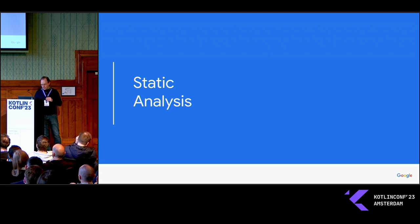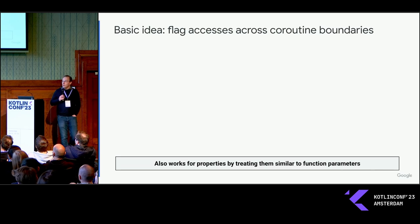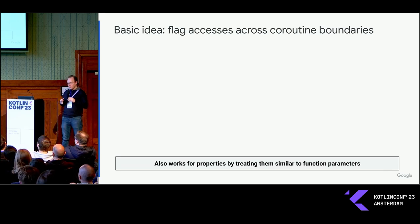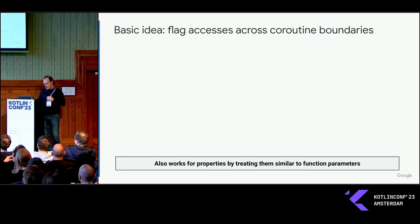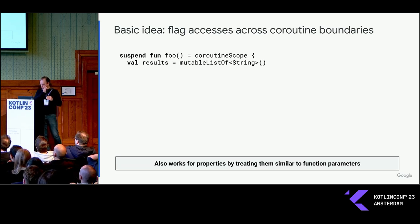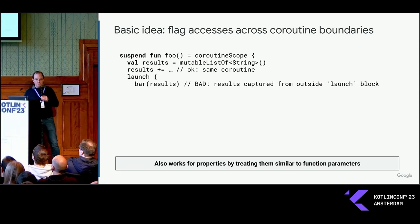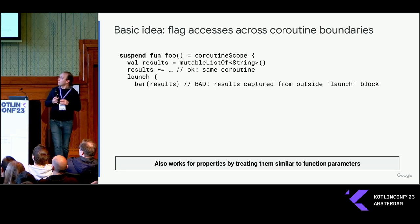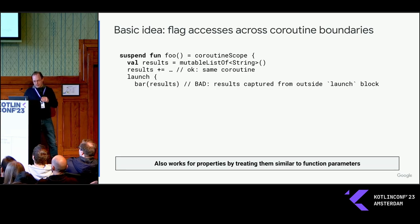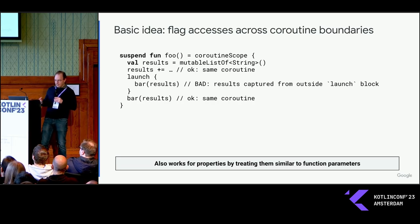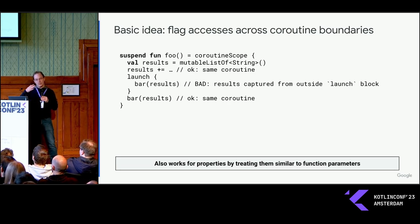Let's talk about static analysis first. The basic idea is to flag accesses across coroutine boundaries — specifically variable accesses. Here's a simple function similar to the example we were looking at before. We create a list, and then we add some elements to it. That's fine — it's the same coroutine, no problem. Then we go into a launch block, so now we're in a child coroutine, and this is something that we flag. The results variable is just accessed from inside this inner scope, and we don't like that. Then we get out of launch, and there are more accesses to results — that's fine, because it executes sequentially in the same coroutine.